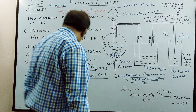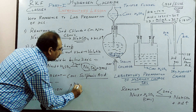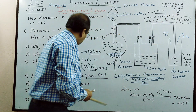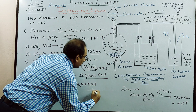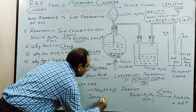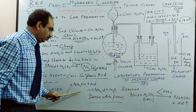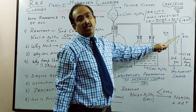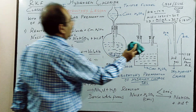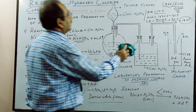Last thing: how do you know whether the gas jar is full or not? This is a very important ICSE question. We take a rod dipped in ammonium hydroxide and bring it near the jar. You will see it reacts with HCl to give dense white fumes of ammonium chloride. This observation is very important. Dense white fumes of ammonium chloride means the gas jar is full.